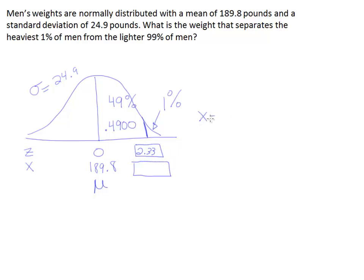The formula for the x-value that we need is z times sigma plus the mean. So in this case, it's going to be 2.33 times 24.9 plus the mean of 189.8. All right, and work that out, and you'll have your final solution.